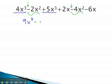Adding the coefficients, negative 2 and negative 4, is negative 6x².